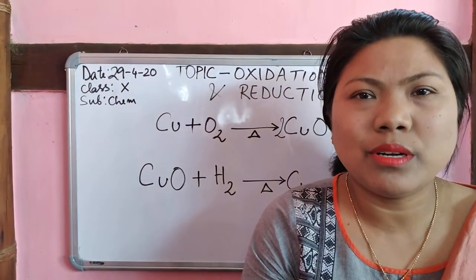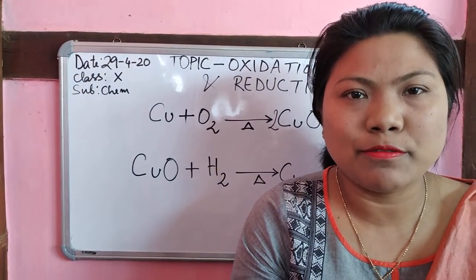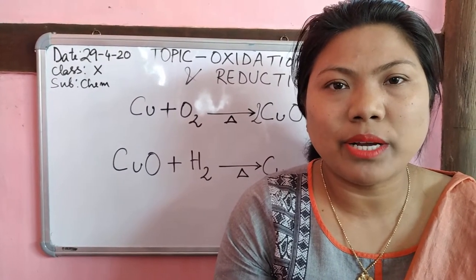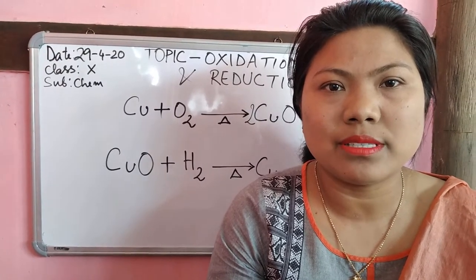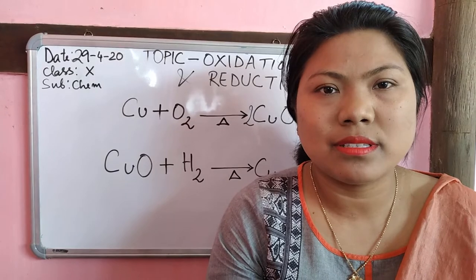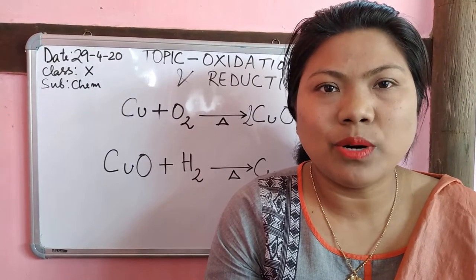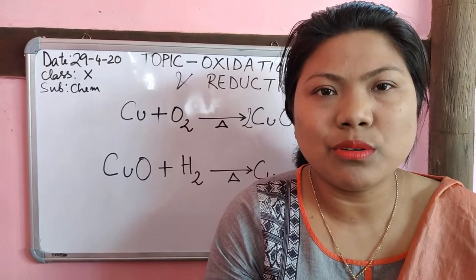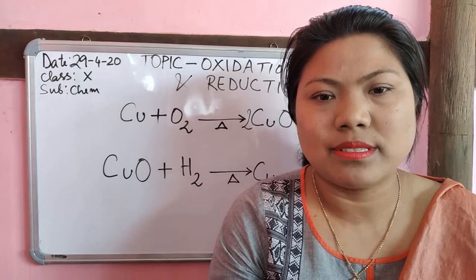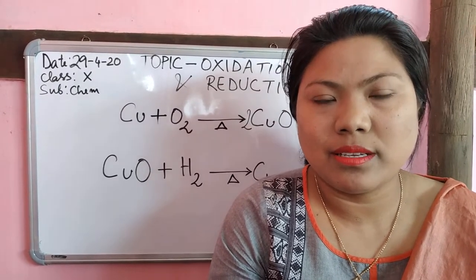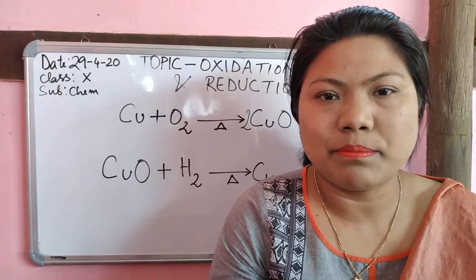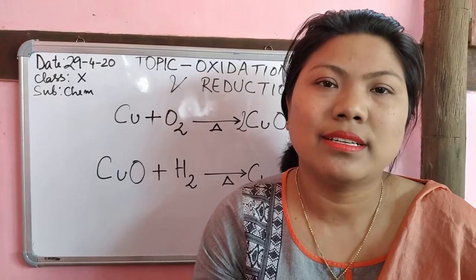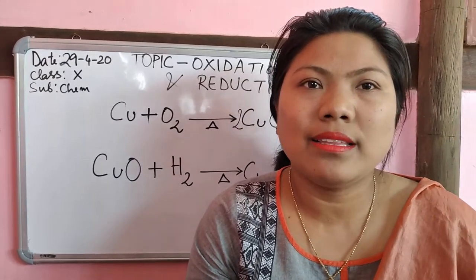Another example: when you cut your fruits, especially apples, and leave them for two to three hours, the fruit surface starts changing color — it turns somewhat brownish. That is also an example of oxidation happening. You expose the cut surface to air, and that is why the oxidation reaction happens and the surface of your cut fruits changes color.